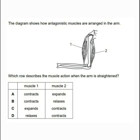Here is the division question, which says the diagram below shows how antagonistic muscles work. We must be able to know what antagonistic muscles mean — there are two muscles that work in conjunction, meaning they do movements at the same time, but one does the opposite of the other.